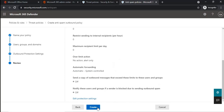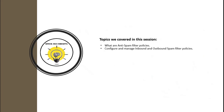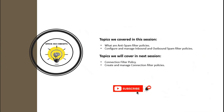This will create an outbound spam filter policy. As discussed, custom policies always take precedence based on the priority you have set. In this session we discussed what anti-spam policies are and how to configure and manage inbound and outbound spam filter policies. In the next video, I'll be discussing connection filter policies. If you learned something new, please write in the comments and subscribe to the channel. Thank you and take care.